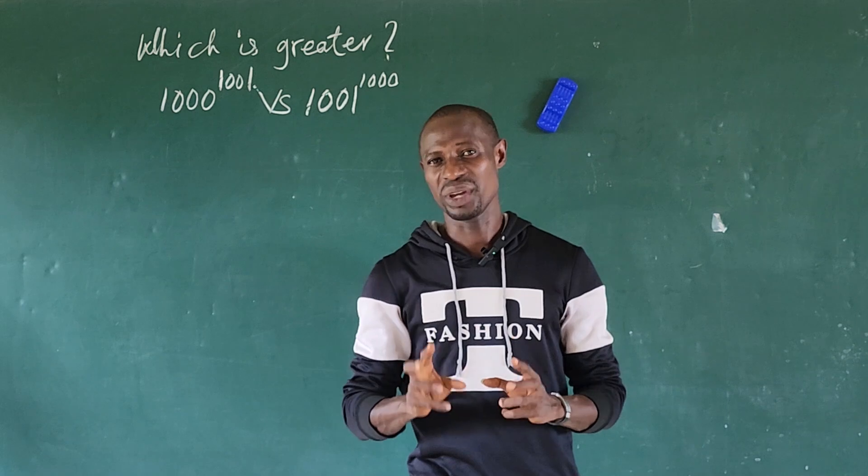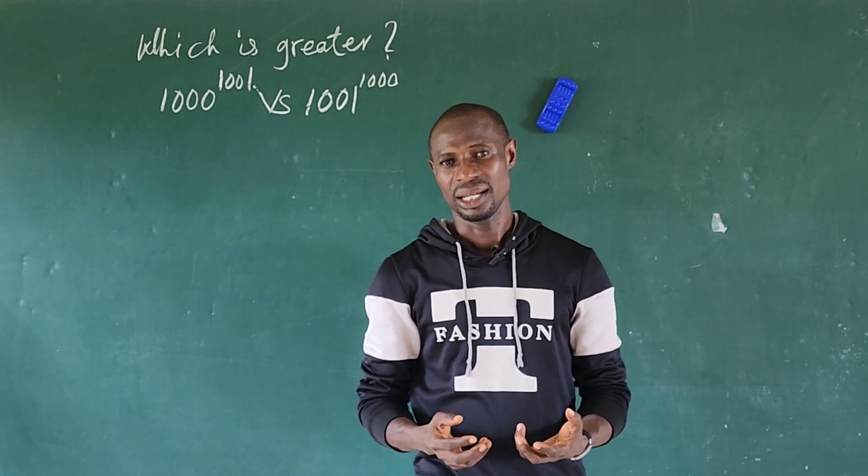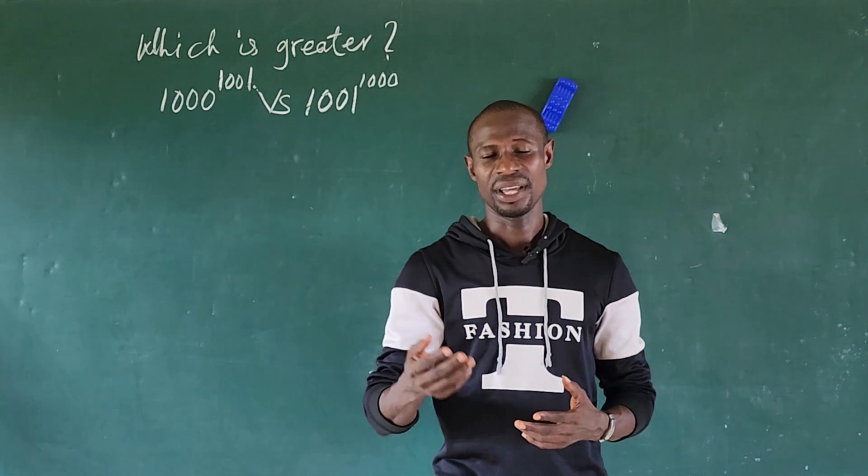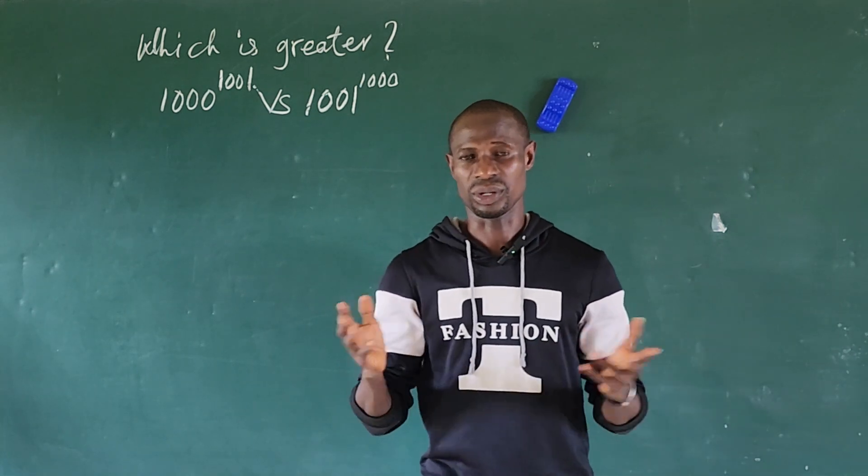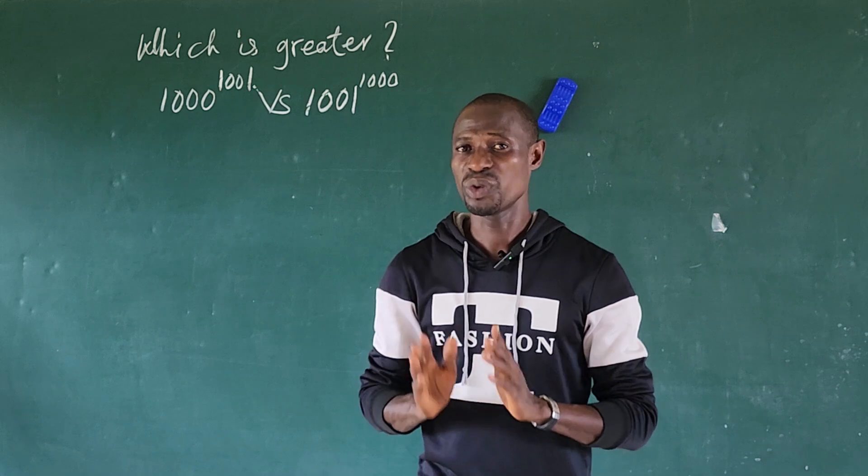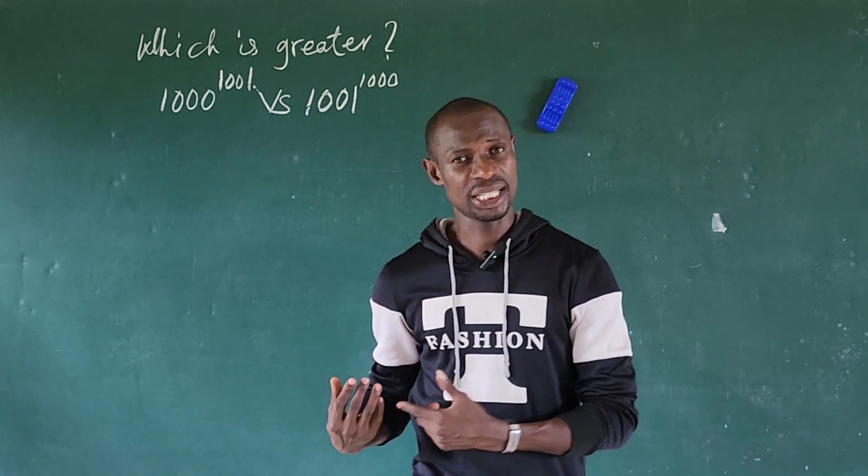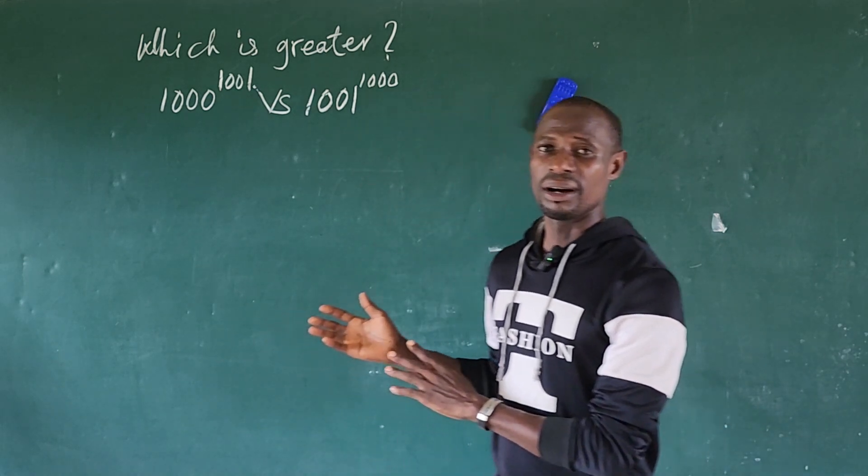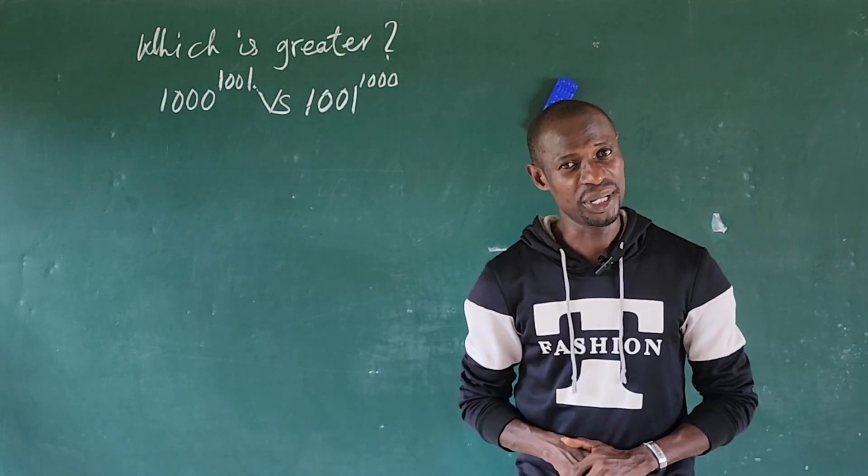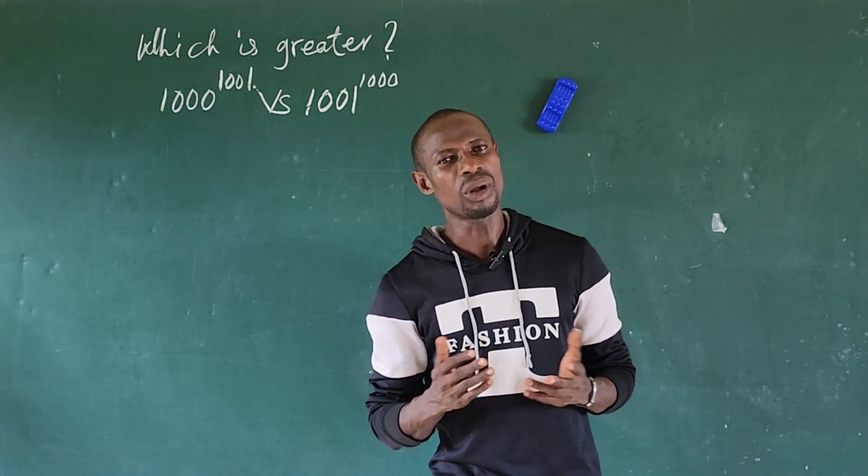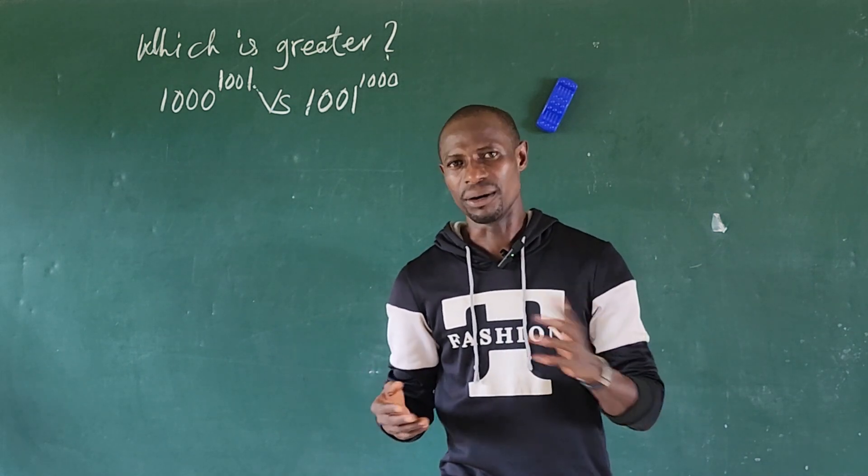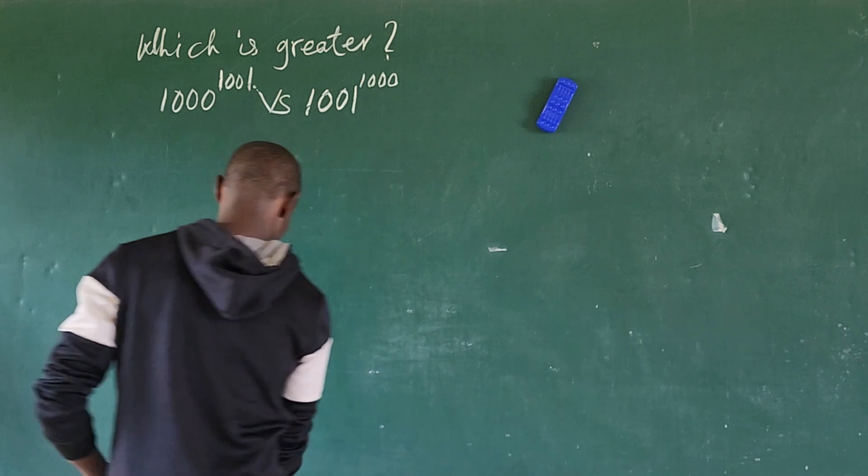Now, if the figures were simpler, like 5 to the power of 6 or 6 to the power of 5, then we can easily use our calculator to compute that and get our answer straightforward to tell us which is greater or which is lesser. But as you can see from this challenge, the figures are huge. So we're going to make use of some laws to prove which of these is greater or lesser. Okay, so let's go to the board.